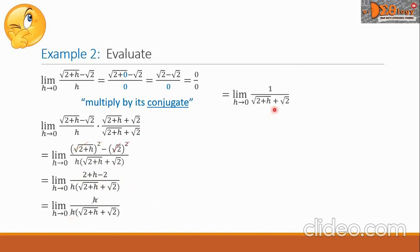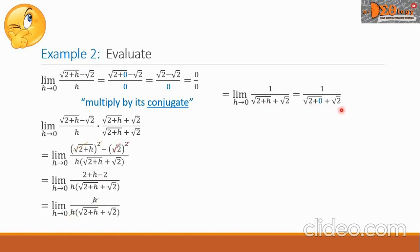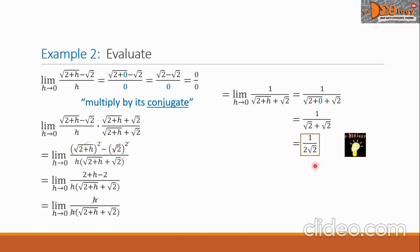Simplifying the numerator: the radical and the power 2 cancel, giving 2 plus h minus 2 over our denominator. The 2 and negative 2 cancel, leaving only h in the numerator. The h in the numerator and denominator cancel. We now have the limit of 1 over the square root of 2 plus h plus the square root of 2, as h approaches 0. Substituting 0: 1 over the square root of 2 plus 0 plus the square root of 2, which simplifies to 1 over 2 square root of 2. This is our final answer.